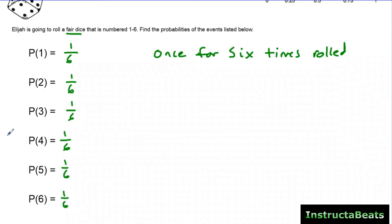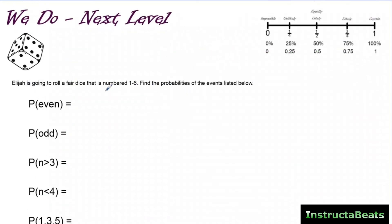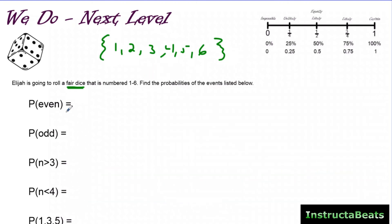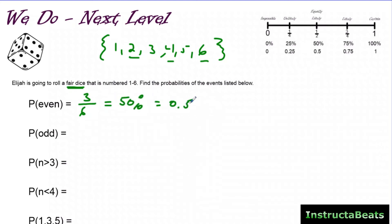Let's take this idea of writing probability to the next level. Same fair dice numbered one through six — but now we want to know the probability of the event that it would land on an even number. The possible outcomes, called your sample space, are one, two, three, four, five, and six. The even numbers are two, four, and six. There are still six outcomes in our sample space and three of them are even, so the probability of landing on an even number is three-sixths, which equals one-half — or 50%, or 0.5.